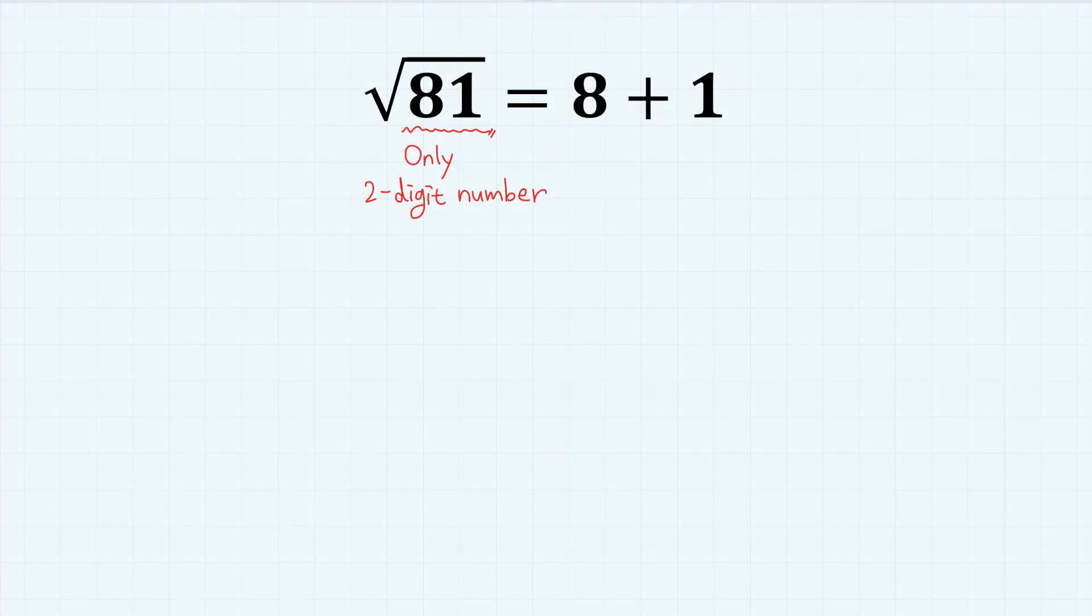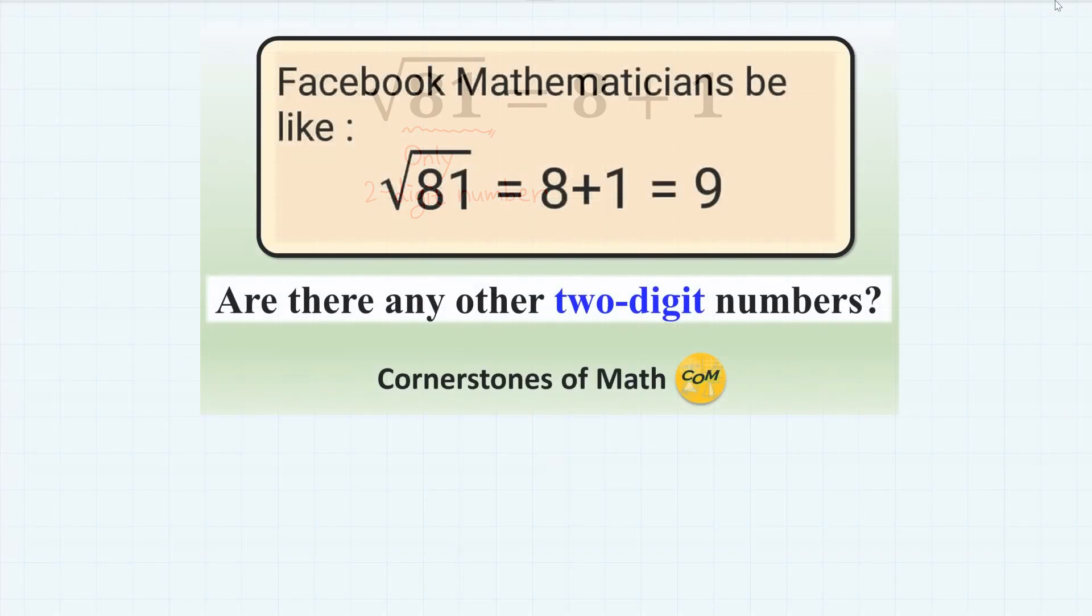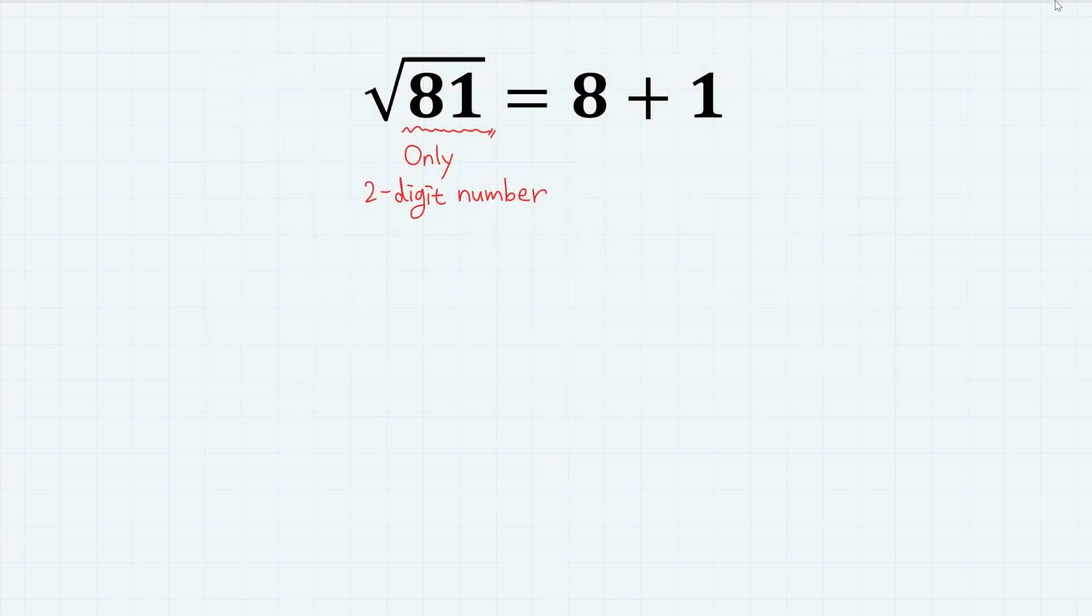Hello, welcome to Cornerstones of Math. Last week, I released this video, which you can check in the description, where I showed you that square root of 81 equals 8 plus 1, and 81 is the only two-digit number that satisfies this property. The positive square root of the number equals the sum of digits of that number.